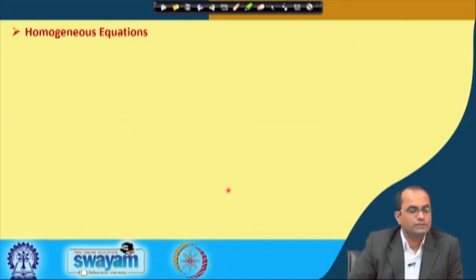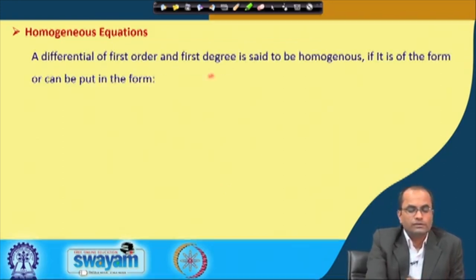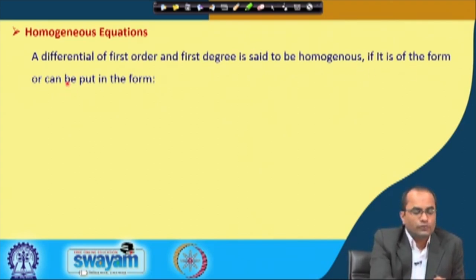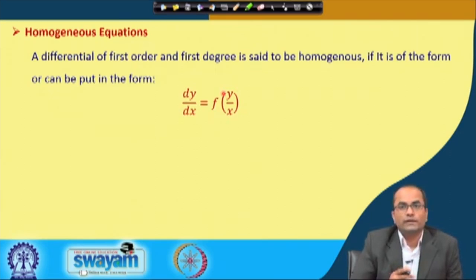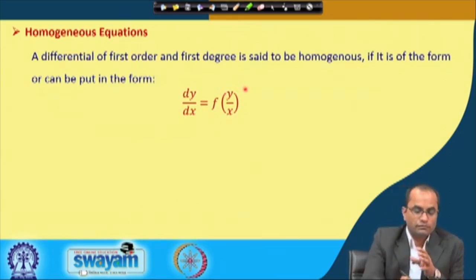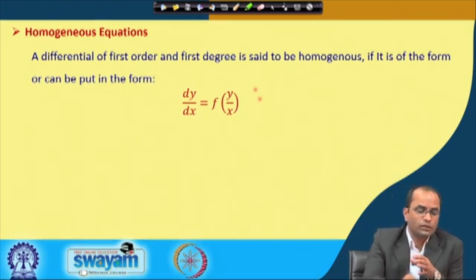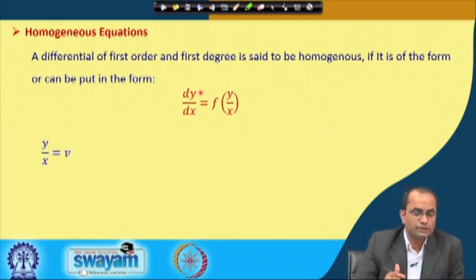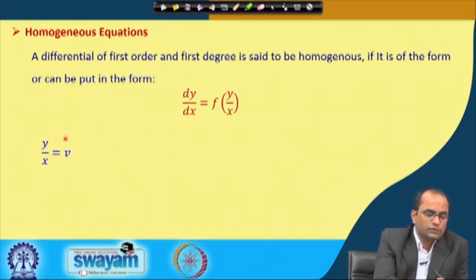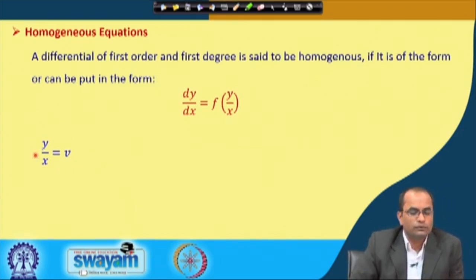Another type of equation we consider now are the homogeneous equations. A first order, first degree differential equation is said to be homogeneous if it is of the form dy/dx = φ(y/x) — that is, if the right hand side can be expressed entirely as a function of y/x.